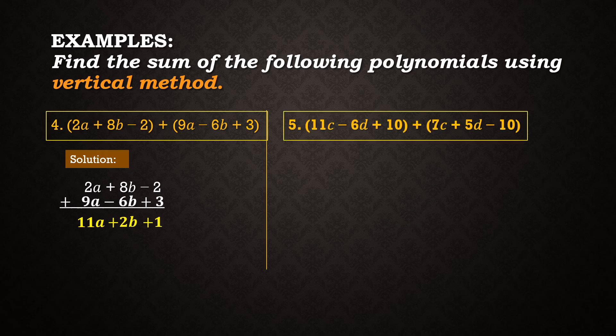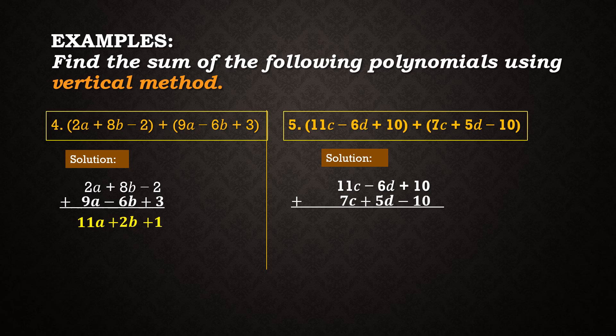For the fifth example, we have 11c minus 6d plus 11 plus the quantity 7c plus 5d minus 10. When we align the terms and add, 11c plus 7c is equal to 18c. Negative 6d plus 5d is equal to negative d. And positive 11 plus negative 10 is equal to 0, so we remove it and simply write 18c minus d. That is our final answer for example number 5.